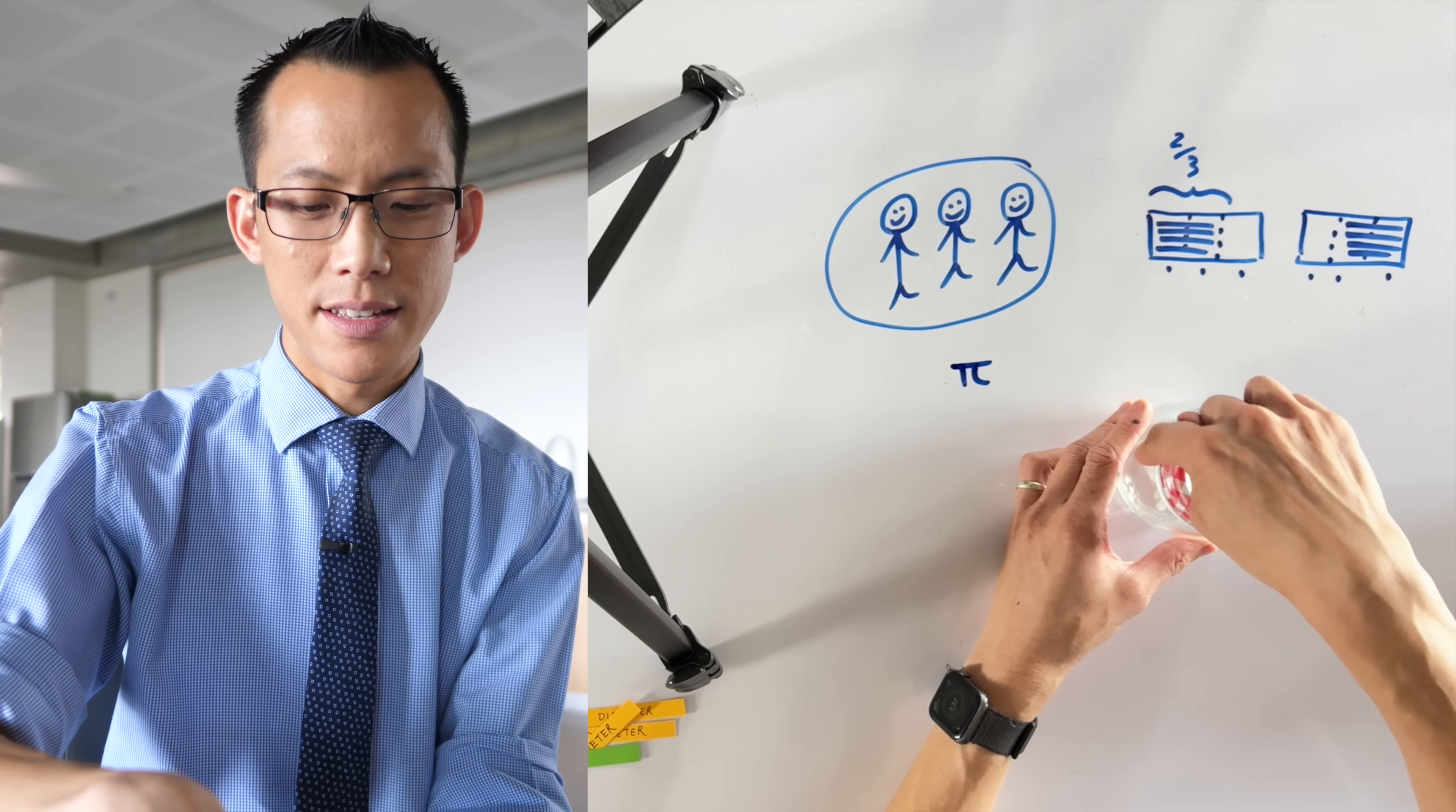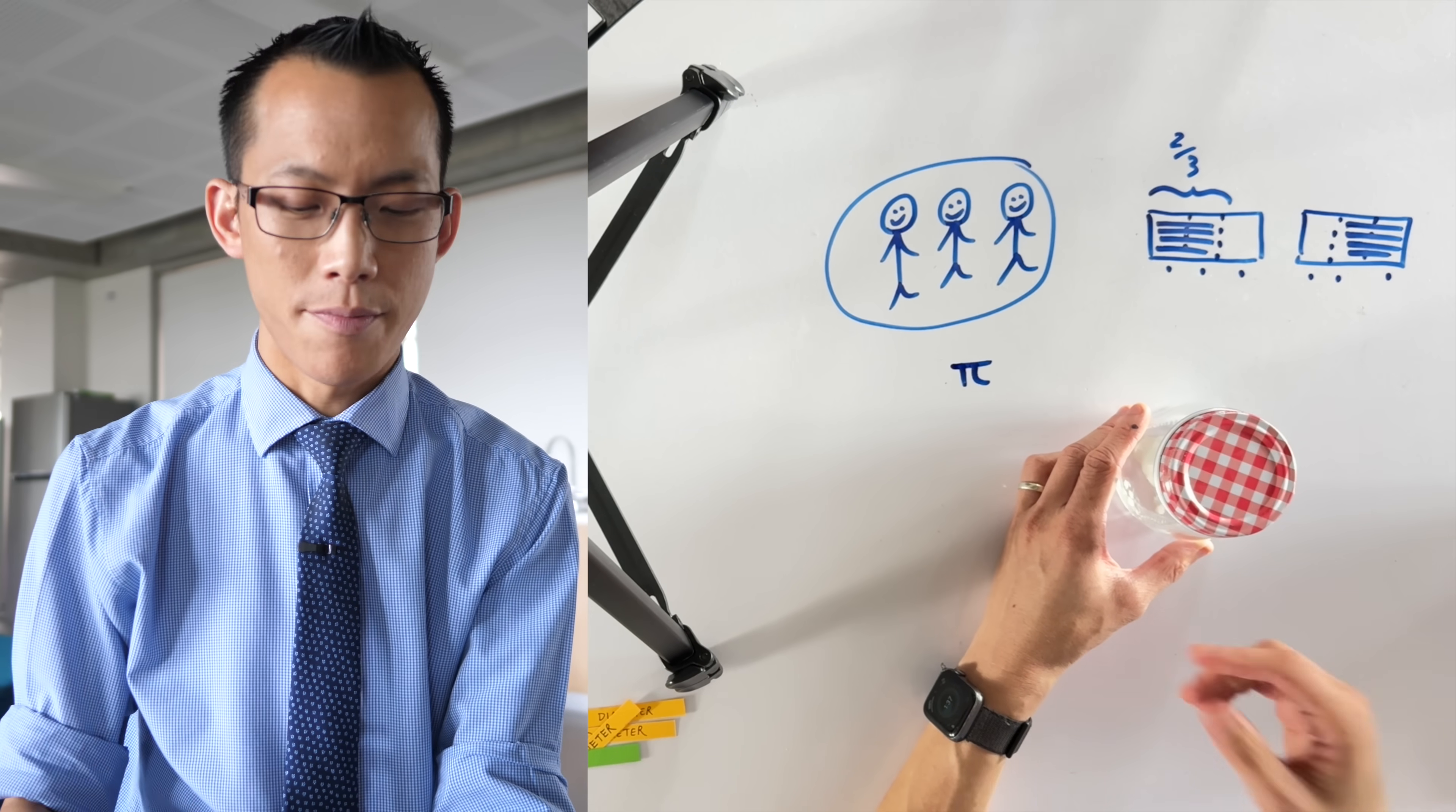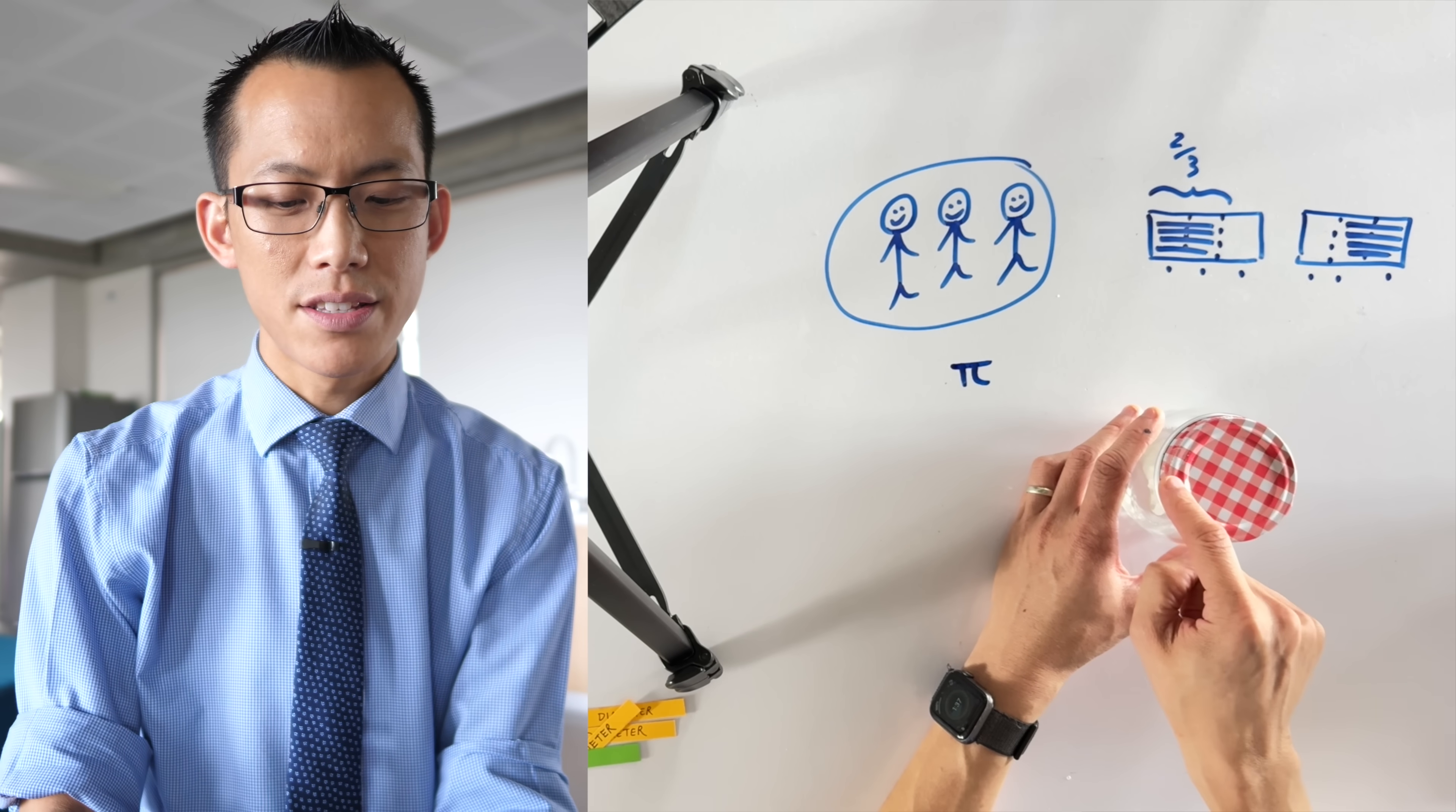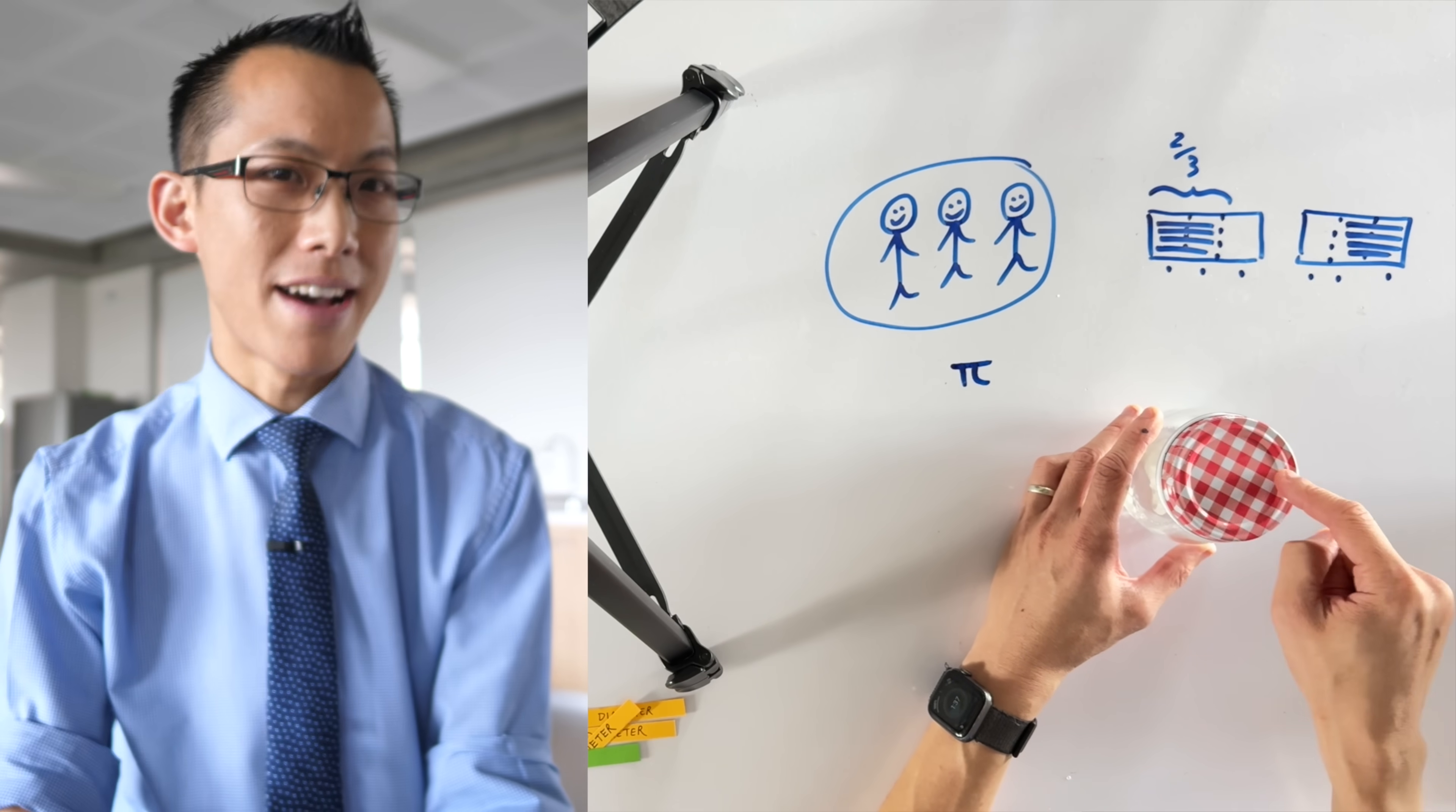Firstly there's the distance around the circle, that's what we call the circumference, and then there is the distance across the circle and that's called the diameter.